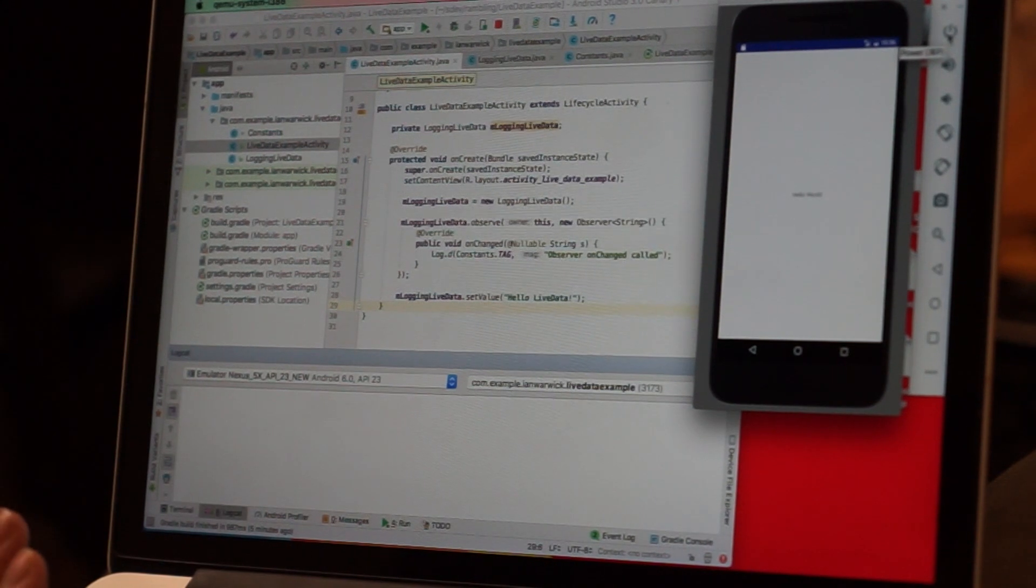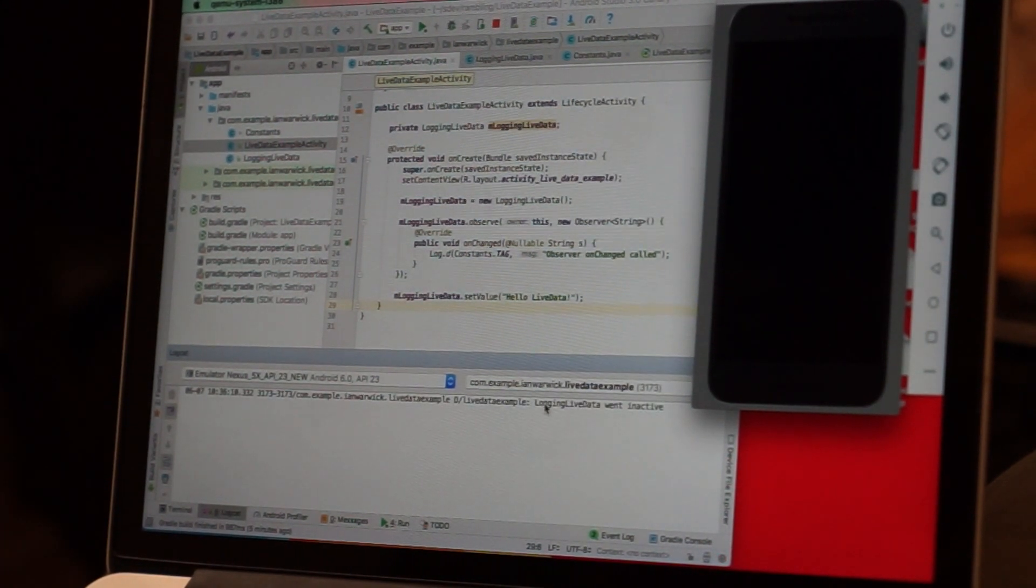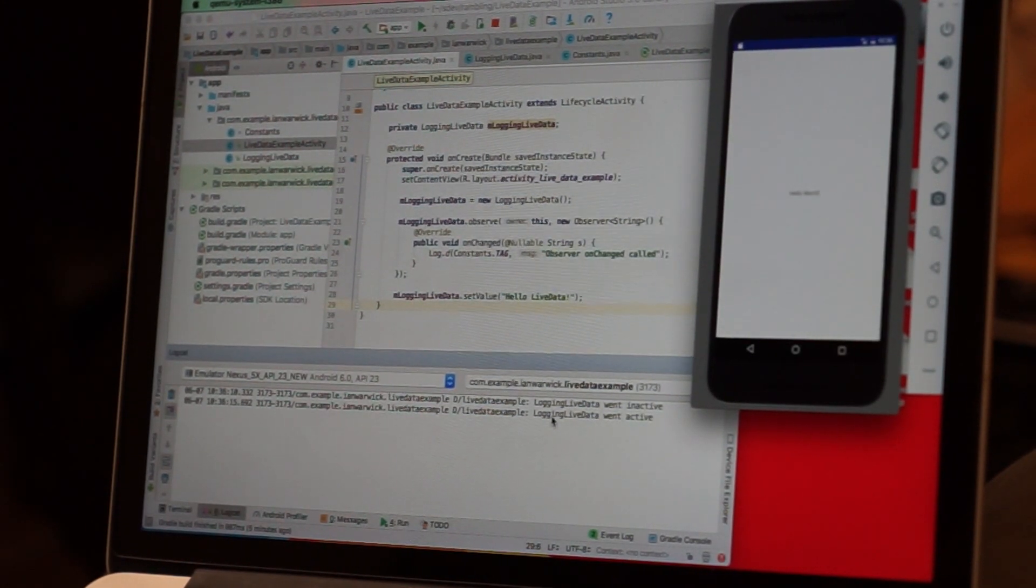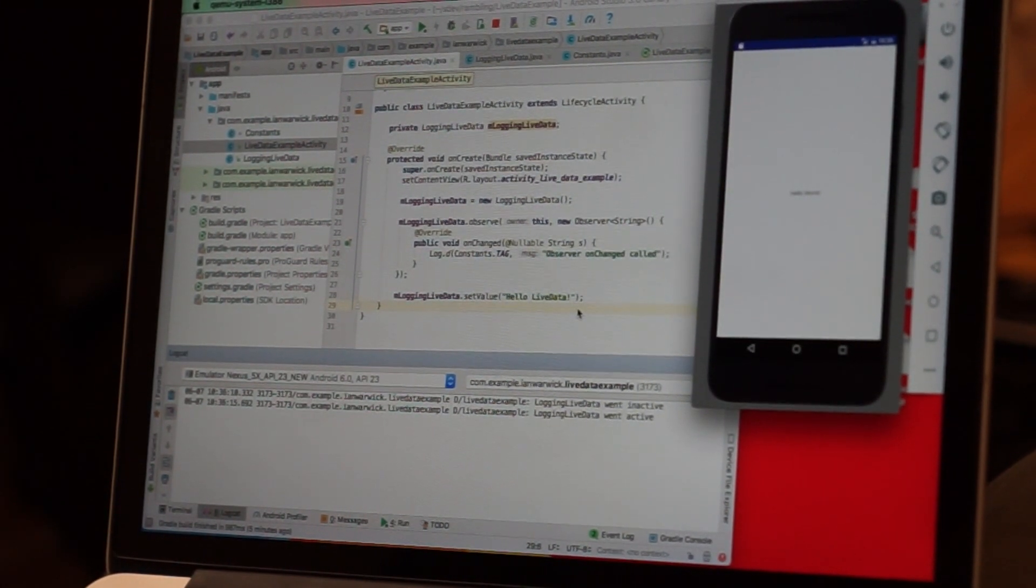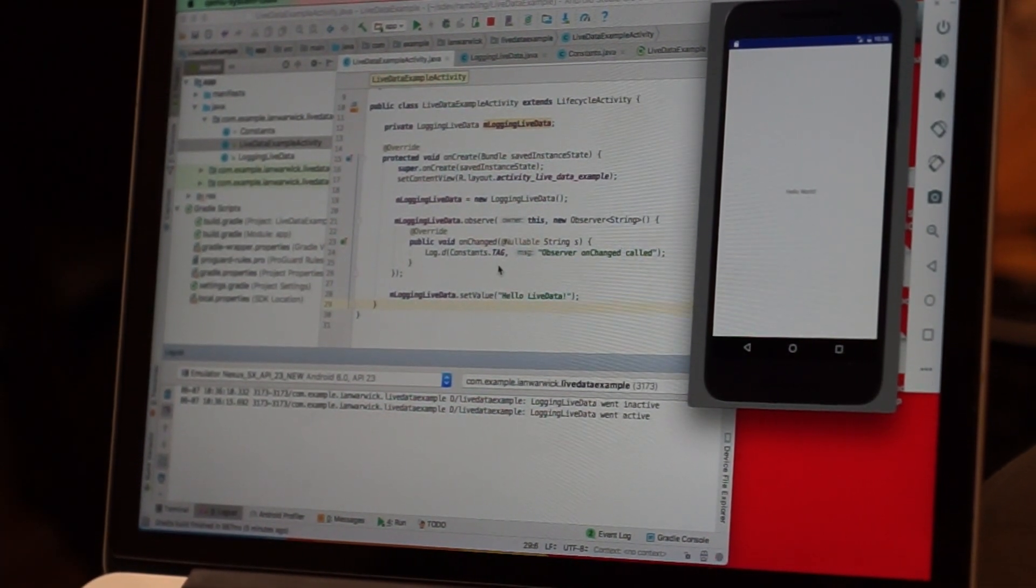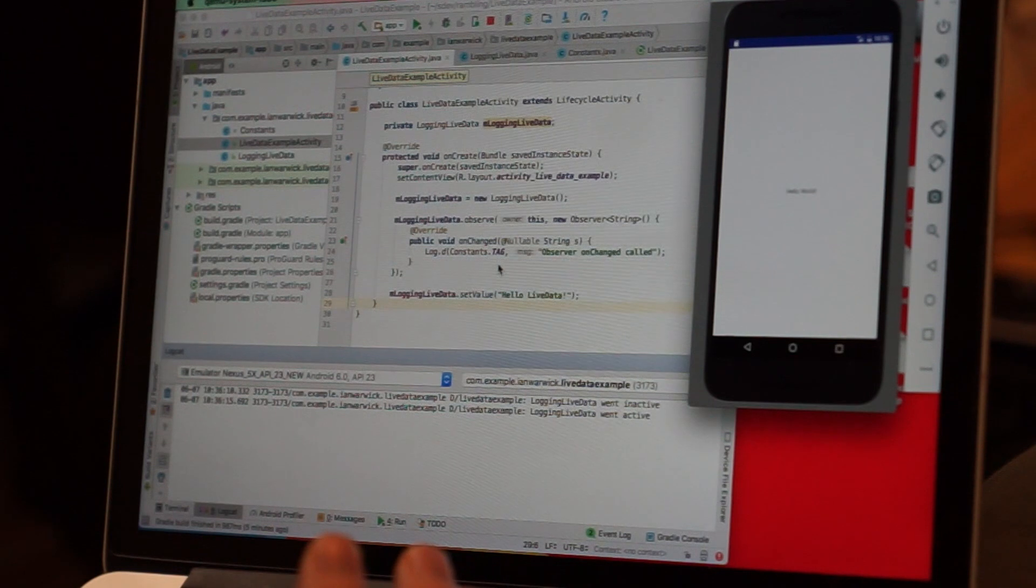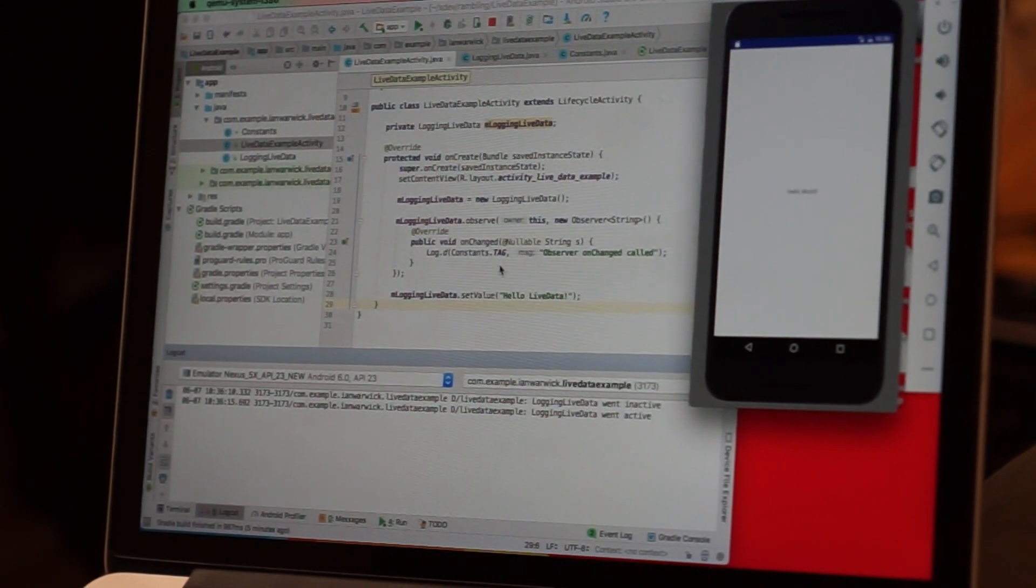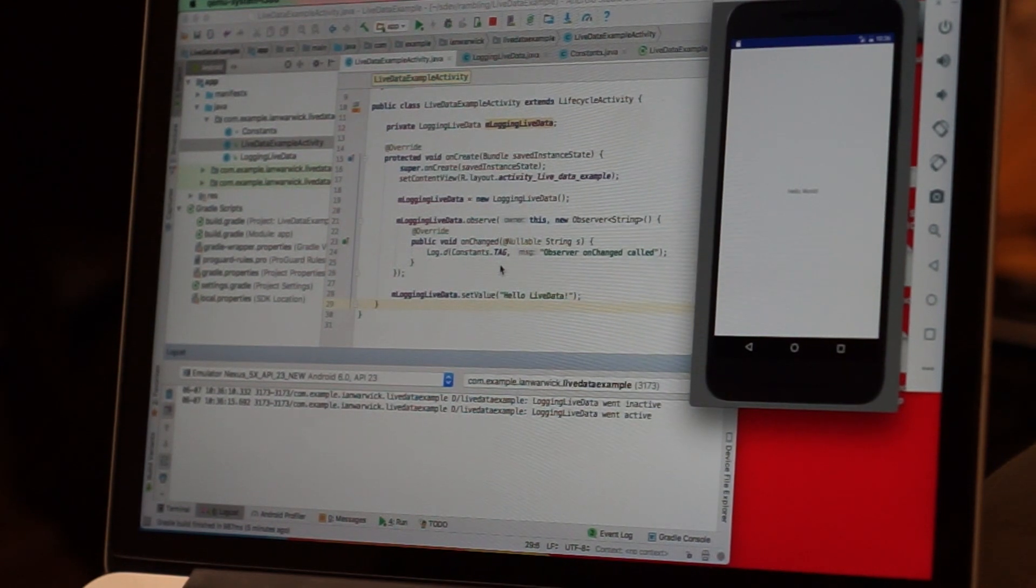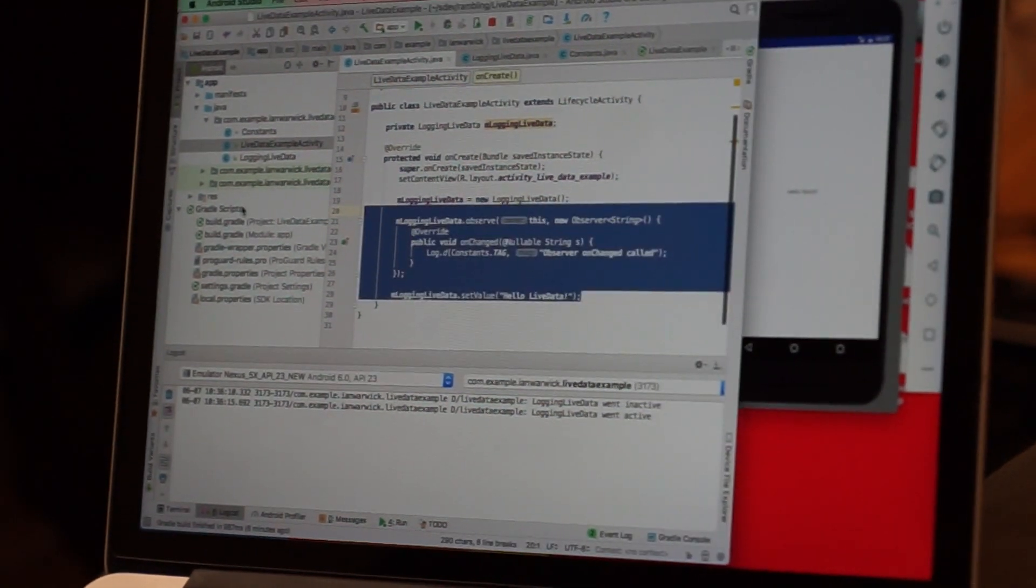If I clear the console we can see that if I close or turn the screen of the emulator off, I get a logging event: logging LiveData went inactive. If I turn it back on I get another logging event: logging LiveData was active. This shows us that when a LiveData's observer's lifecycle owner goes into a pause state it'll go inactive, and when it goes into a resume state it will go into active. And that's pretty much it.